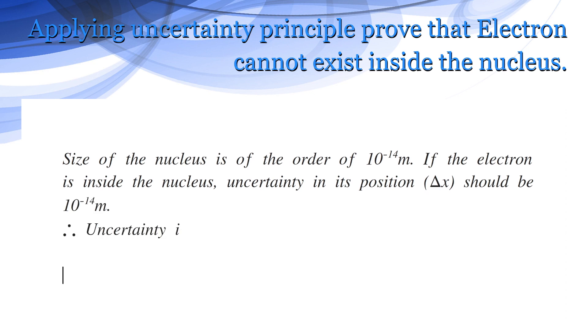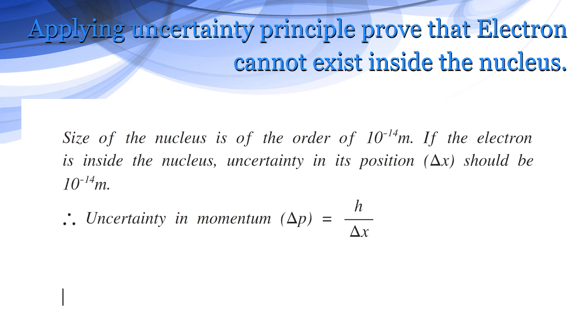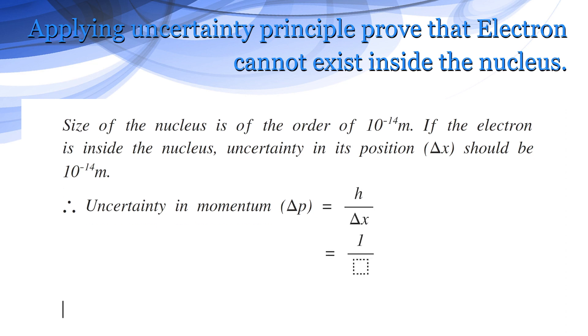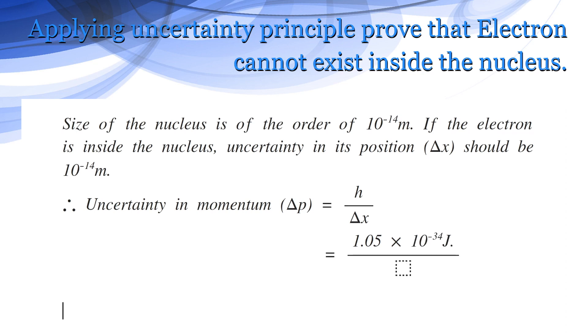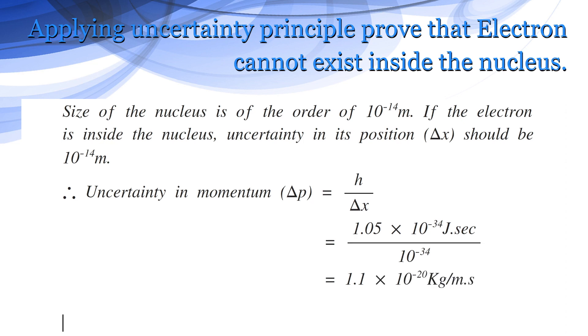Therefore, uncertainty in momentum delta p equals h by delta x, which is 1.05 into 10 to the power minus 34 joules second divided by 10 to the power minus 14 meters, which comes to 1.1 into 10 to the power minus 20 kilograms per meter second.